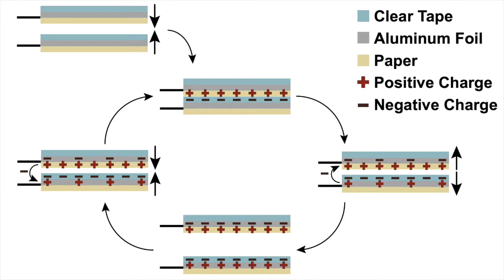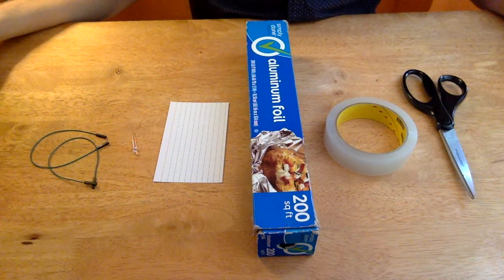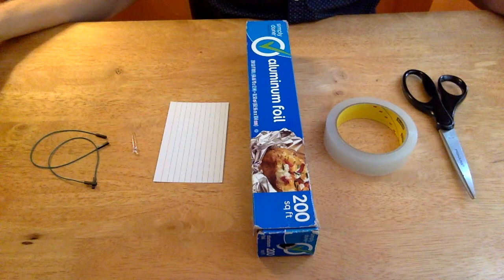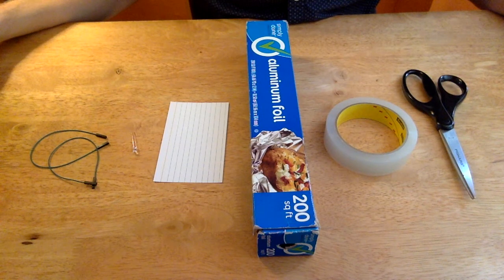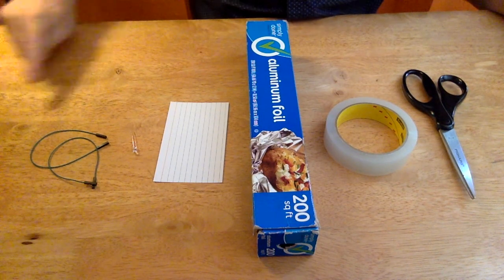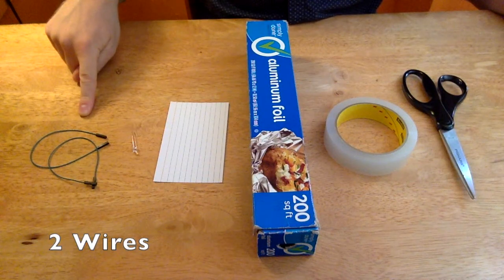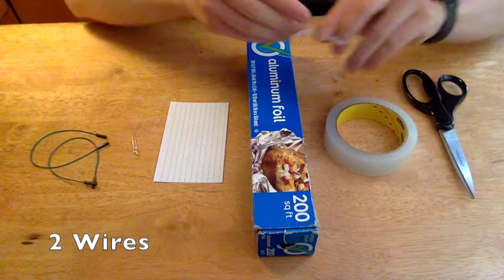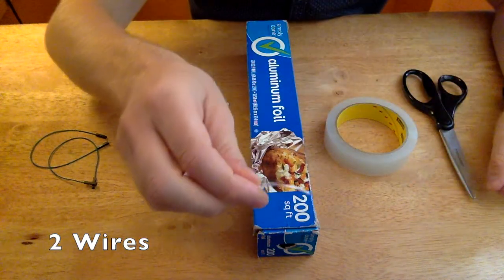Let's go over the supplies we'll need to build a nanogenerator before we get into the actual building itself. For each nanogenerator you want to build, you'll need two wires, which you can use either something like these jumper wires that I have here, or you might be able to take a twist tie from like a sandwich bag and cut off the plastic to expose the metal there.